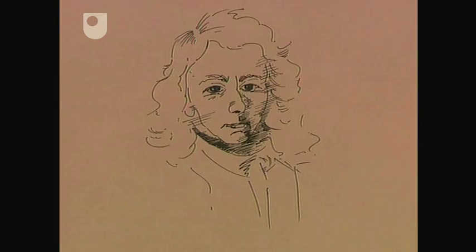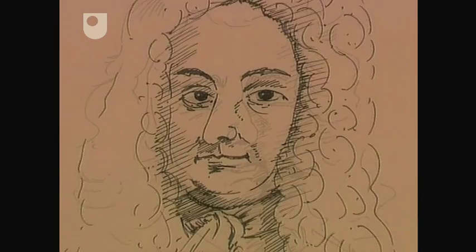The Newton-Leibniz dispute became more and more acrimonious and contributed to a growing divide between mathematicians in Britain and those in Europe. The dy by dx notation wasn't used in England until the 1820s, and only after a campaign which involved Charles Babbage, the inventor of the calculating engine, was it finally introduced into English mathematics.